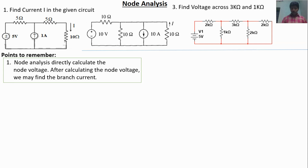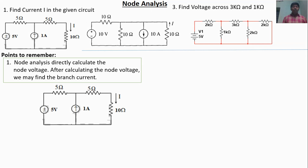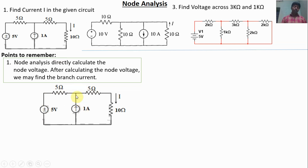What does node mean? If more than two branches are connected at a junction, that junction is called a node. In this problem, one junction has only two branches connected — so it will not be considered a node. Where three branches are connected, that junction is one of the nodes. One of the nodes will be considered as ground voltage — zero.